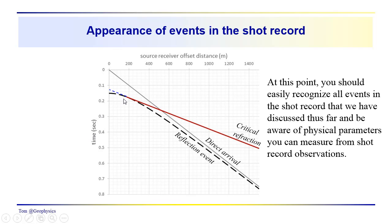When you see a data set like this, you should be able to identify the different events. Remember, we're dealing with a simple two-layer case — two velocities and flat layers. We have a direct arrival traveling along the surface in the upper layer. We have a hyperbolic reflection event which becomes asymptotic to the direct arrival and is traveling with velocity V1, reflecting from points at the interface between layers 1 and 2.